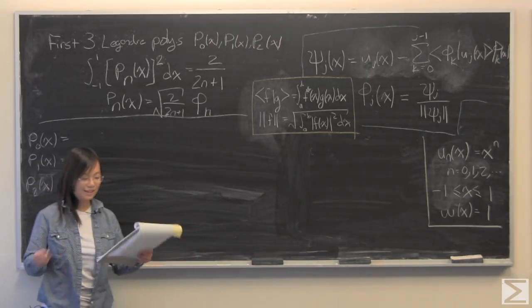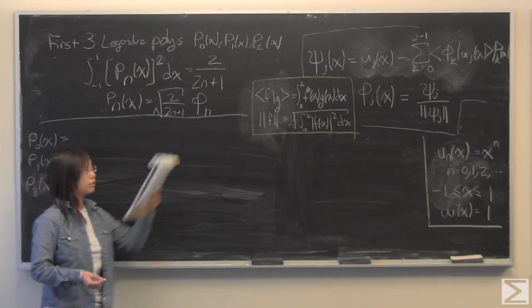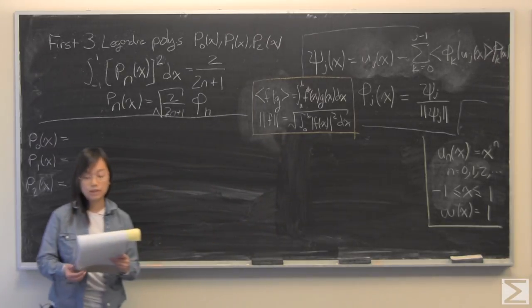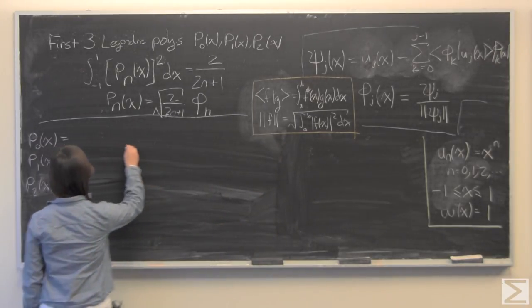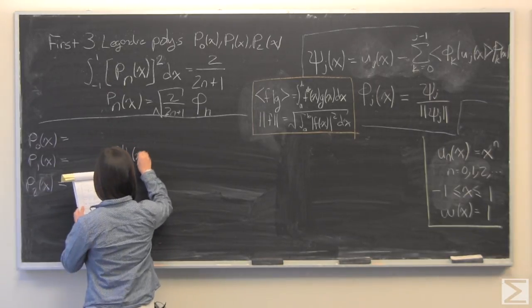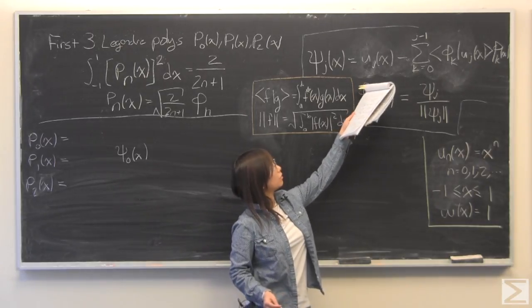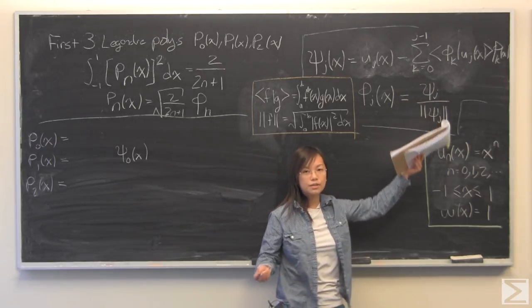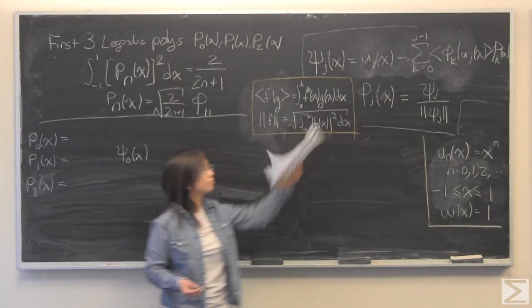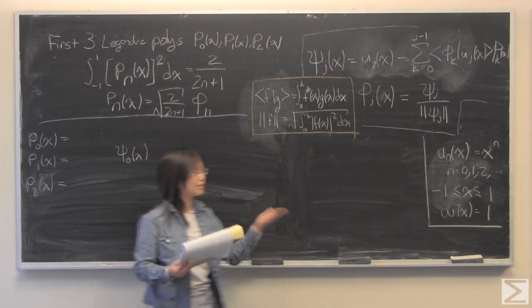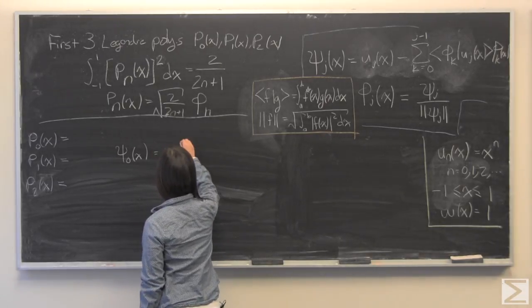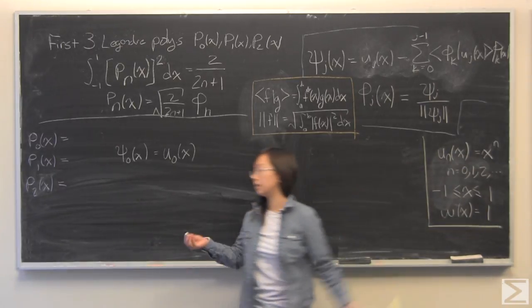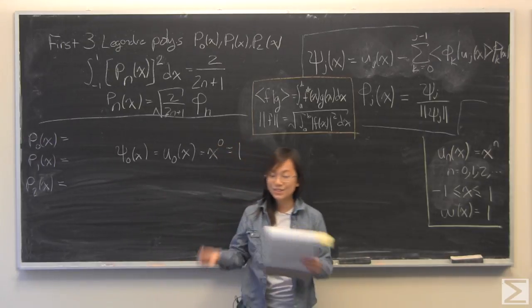So the steps that we're going to take, and we are going to take these three times for each Legendre polynomial, is to first look at Psi of j, where j is 0, 1, or 2, and we're going to look at them in order. So we're going to start by looking at Psi_0 of x. As I have written up here, that is going to be equal to U_0 of x for Psi_0 of x. The sum isn't going to be anything for 0, so very simply, this is equal to U_0 of x. U_0 of x, we see U_n of x is x to the power of n. Plug in 0, you get 1.